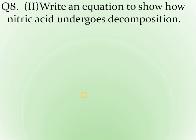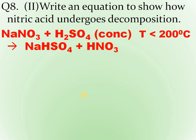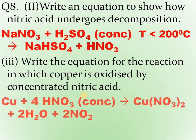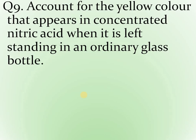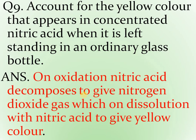When writing equations, do not just write formulas — write the full balanced chemical equation. When copper is oxidized with concentrated HNO3, use the coefficient 4 for HNO3 (concentrated). Carbon also uses 4. Products are copper nitrate, water, and nitrogen dioxide. If carbon is the reactant, carbon dioxide is formed instead of copper nitrate. Also: yellow color appearing in nitric acid left standing in an orange glass bottle — this is due to decomposition of nitric acid producing reddish brown NO2 gas, which dissolves in the colorless acid giving it a yellow color.